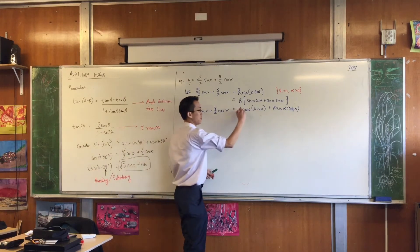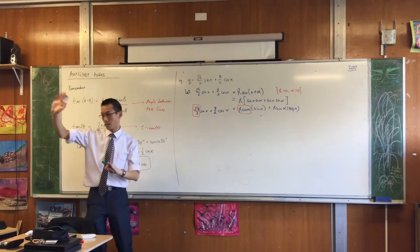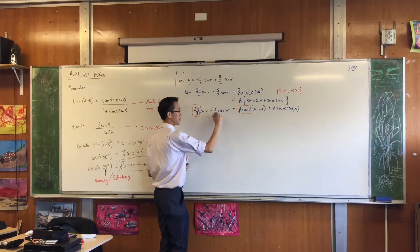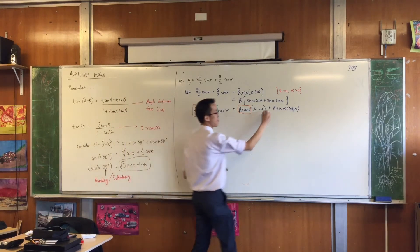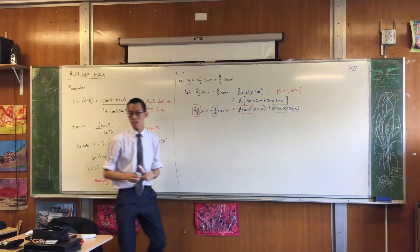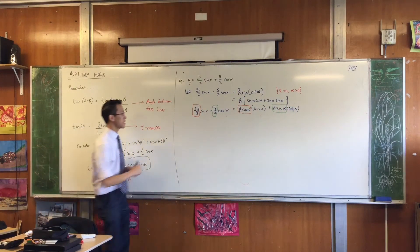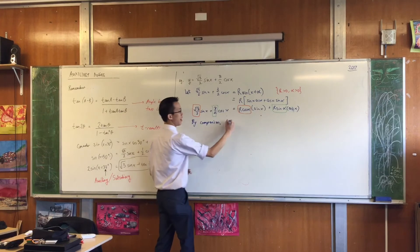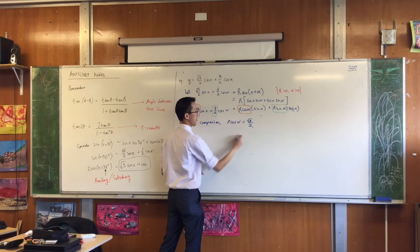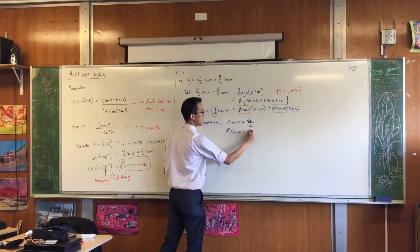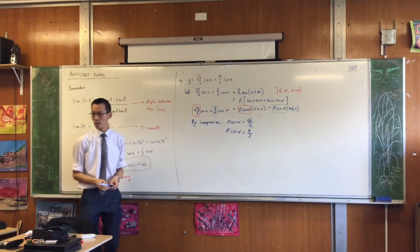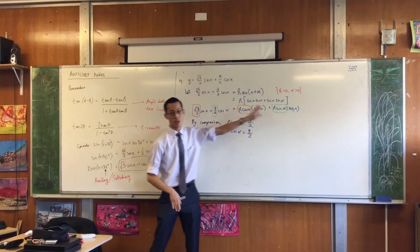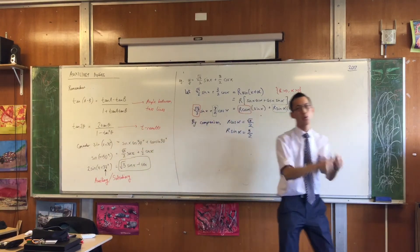But on the right-hand side, I also have sin x's. How many do I have? I have R cos α of them, whatever that happens to be equal to. I'm matching up the sin x's on the left and the sin x's on the right. I can do exactly the same thing for the cosines. This is how many of them I have on the left and this is how many I have of them on the right. Those numbers have to be the same. So therefore, I can say, by comparison, R cos α equals this and R sin α equals that.